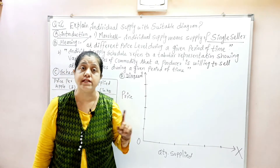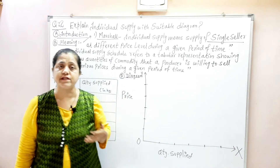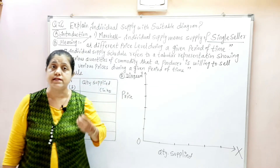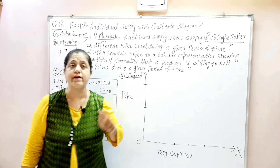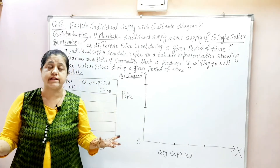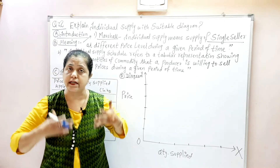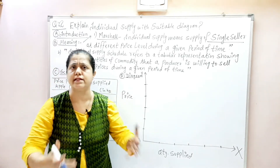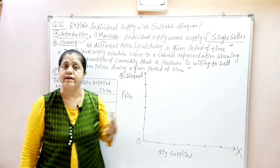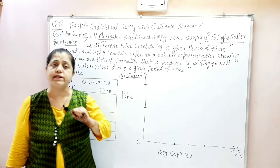We saw that there is a direct relationship between price and supply - that is where supply analysis begins. Marshall tried to develop supply analysis in the same way we understood demand analysis. We will understand producer behavior - how he is responding to price, and what factors increase or decrease supply. Today we will discuss individual supply in a very easy way, as simplicity is our main motto.